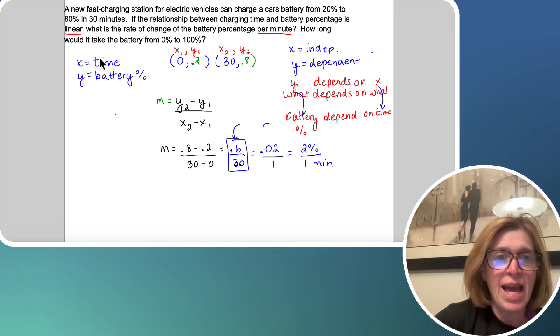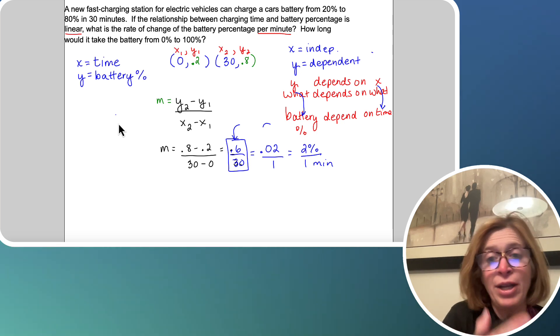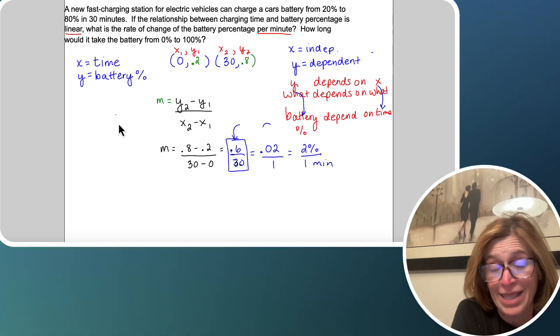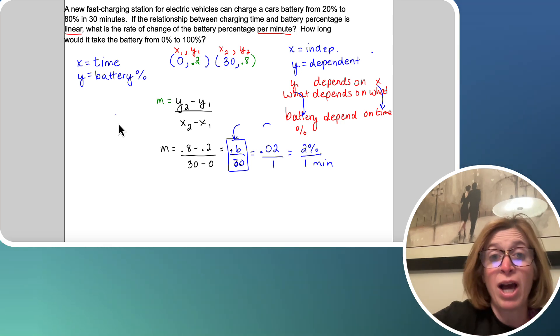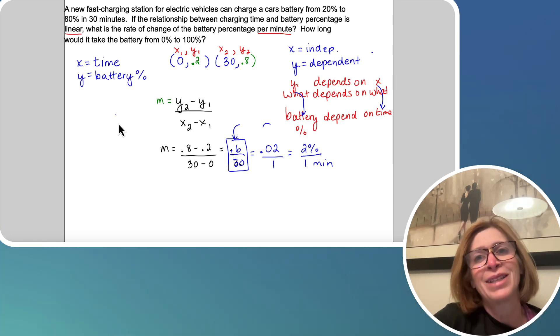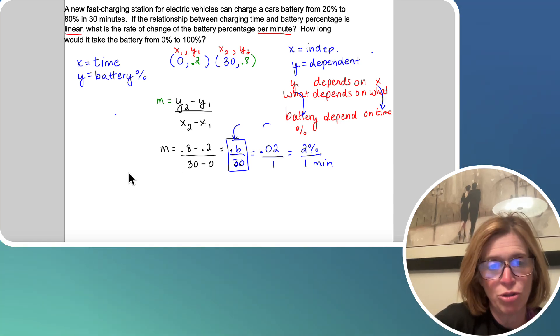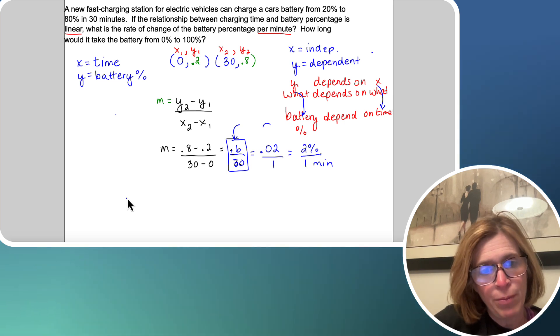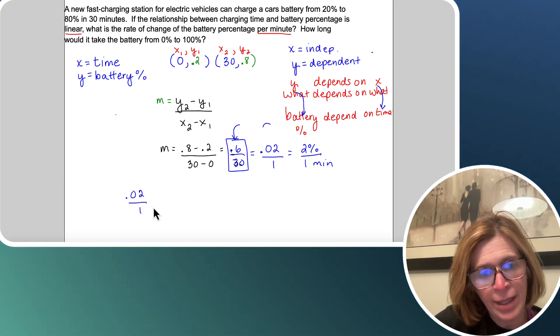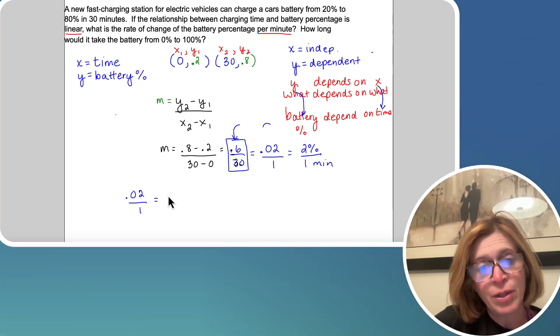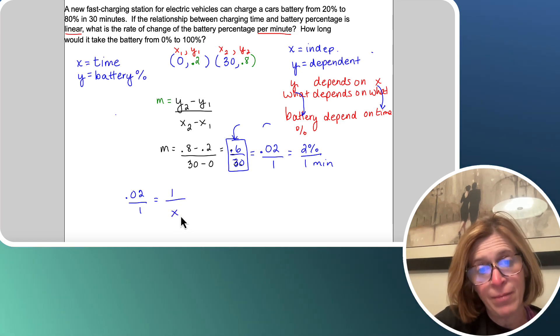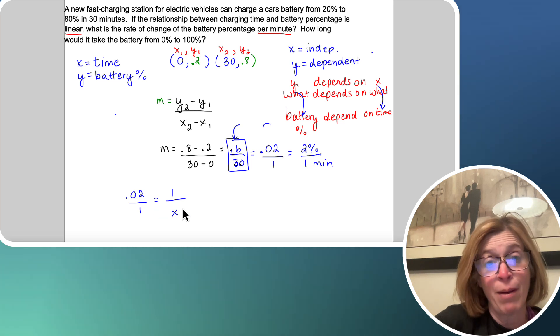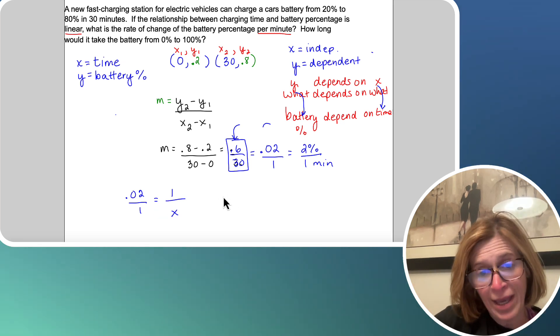Now how would I take the next question? How long would it take the battery to go from 0% to 100%? This is actually a great place to use a proportion, because now I know that for every one minute, I'm going up 2%. So I want to know how long it's going to go from 0 to 100. So I'm doing a comparison, which means I can use a ratio or a proportion. So I'm going to do 0.02 over 1 equals 100%, which is 1 over x, because I'm trying to find how long it would take. And remember, the denominator is my time. So I can cross products here, giving me 0.02x